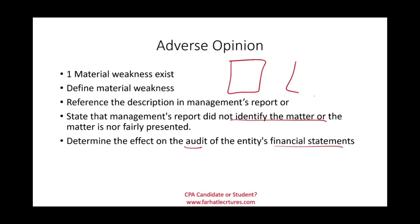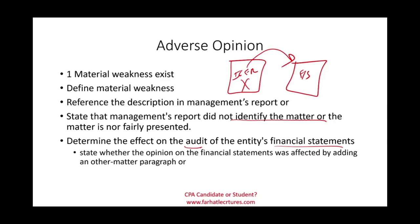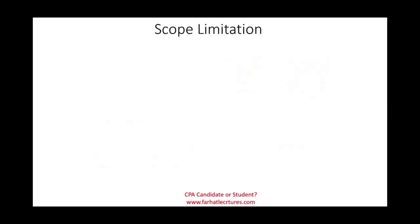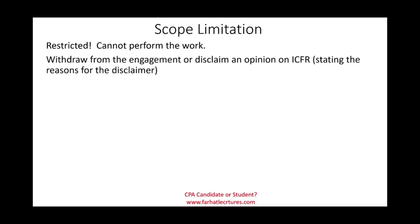We are looking at two reports: one on internal control over financial reporting and one on the financial statements. If we have an adverse opinion on internal control, how does that affect the financial statement opinion? We might state whether the financial statement opinion was affected by adding an other matter paragraph, or include in the material weakness paragraph an explanation of any effect on the financial statements. We could also have a scope limitation — a restriction where we cannot collect sufficient appropriate evidence.